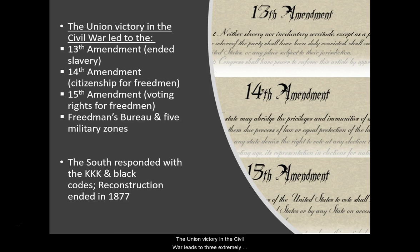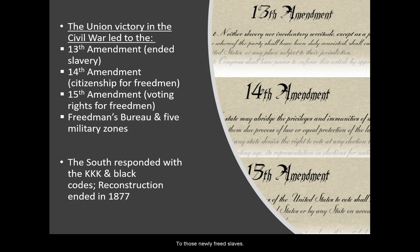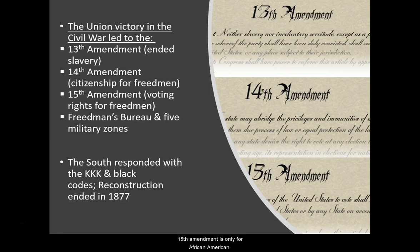The Union victory in the Civil War led to three extremely important constitutional amendments as well as the creation of the Freedmen's Bureau, an organization that fought for the rights of newly freed slaves, and the division of the South into five military zones where Union military enforced the new laws. The three Reconstruction Amendments are: the 13th Amendment, which abolishes slavery in the United States; the 14th Amendment, which grants citizenship to newly freed slaves; and the 15th Amendment, which allows voting rights to freed men. Importantly, women — regardless of color — were still not allowed to vote; the 15th Amendment was only for African American men.